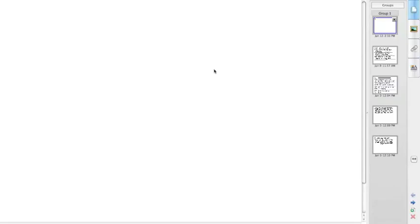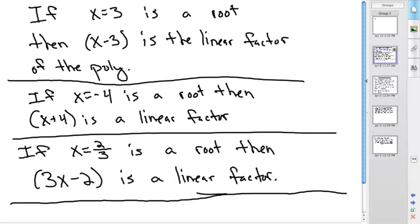We're going to go over the conjugate root theorem, but first let's refresh our memory. If x equals 3 is a root of a polynomial, then x minus 3 is a linear factor. If x equals negative 4 is a root, then x plus 4 is a linear factor. If x equals two-thirds is a root, then 3x minus 2 is the linear factor. We're working backwards: if x equals 3, set it equal to 0, and you get x minus 3 equals 0.